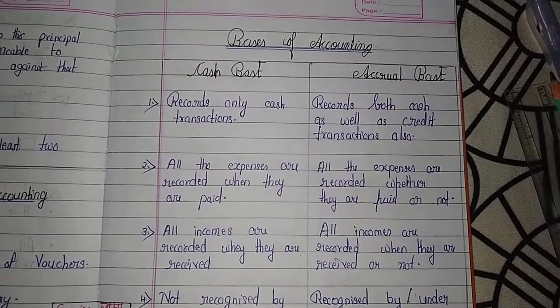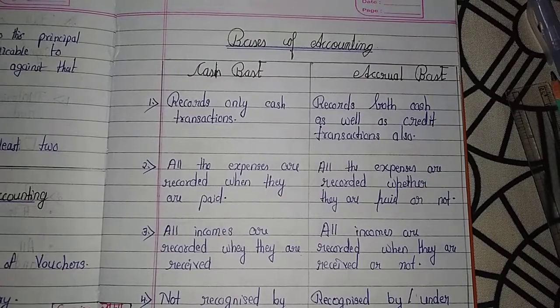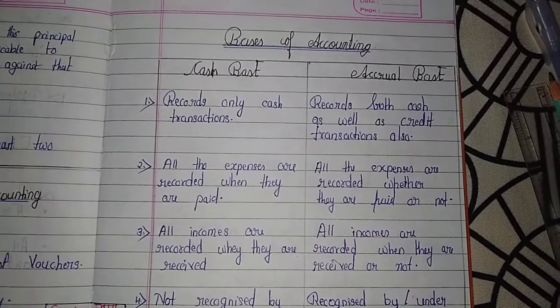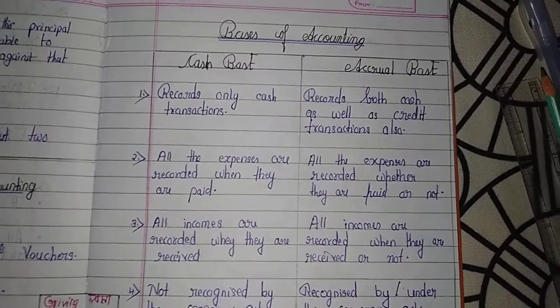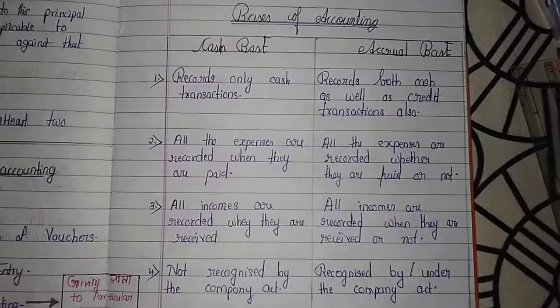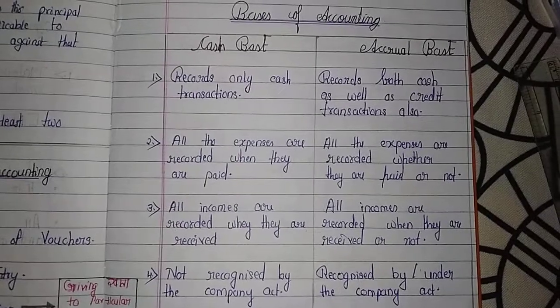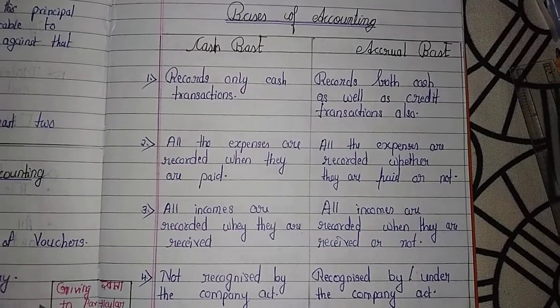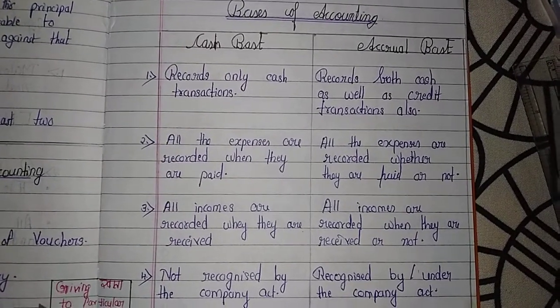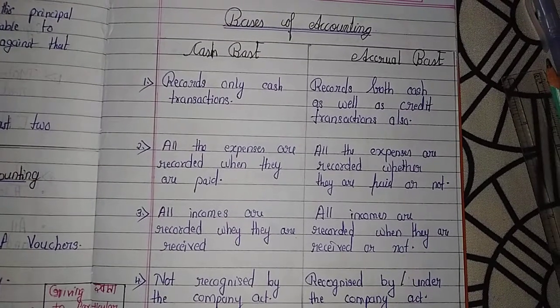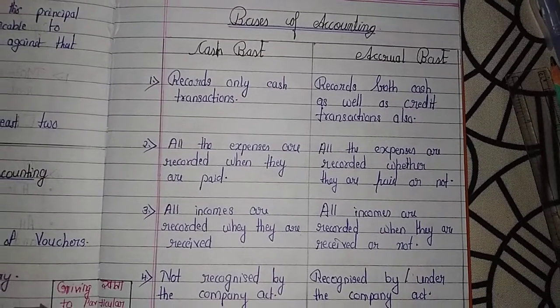Cash base records only cash transactions — matlab, sirf cash transactions record karta hai — whereas accrual base records both cash as well as credit transactions.